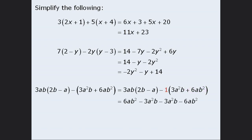From here, we can simplify. First, we have 6ab squared minus 6ab squared — these two terms cancel out. Next, we have negative 3a squared b, and from this we are subtracting 3a squared b, which simplifies to be negative 6a squared b. So we have simplified the expression on the left hand side to be negative 6a squared b.